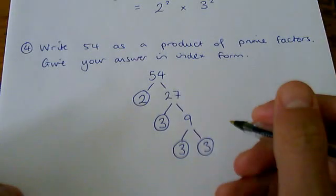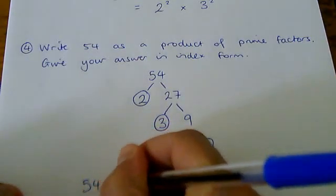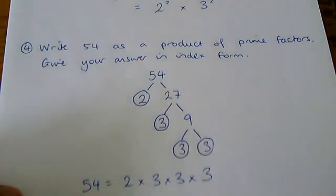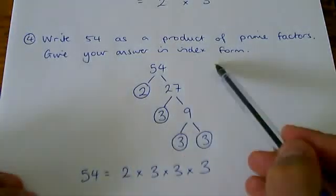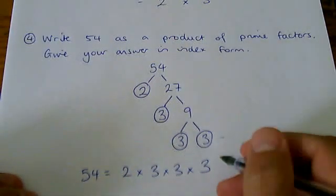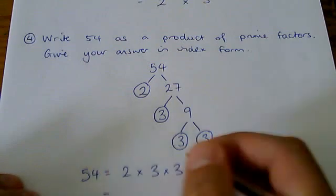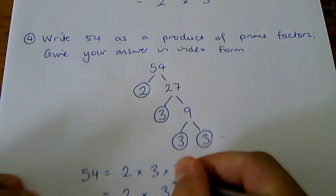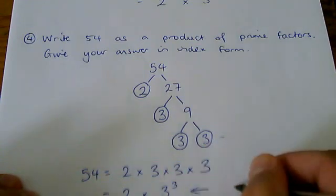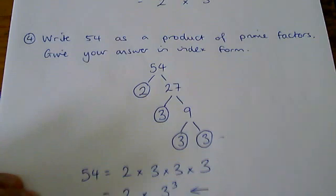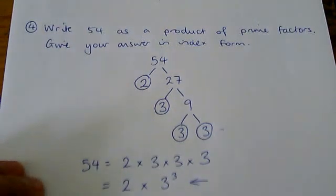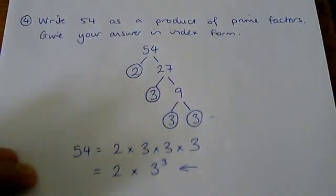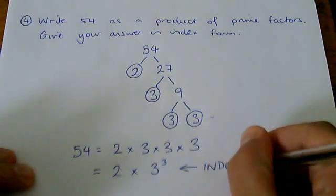Let's have a look at how we write that in index form then. So 54 is 2 times 3 times 3 times 3. Now in this question, because it said give your answer in index form, that answer would lose you one mark. So you will now have to write it how many? 3 times 3 times 3, it's cubed. So that is the correct answer. That will give you full marks. Let's just move that a little bit. So this index form is what's required.